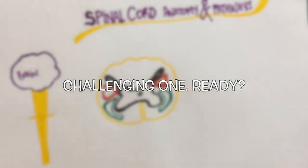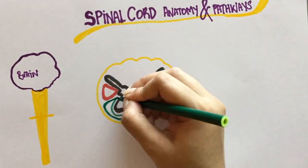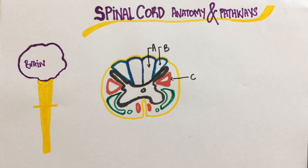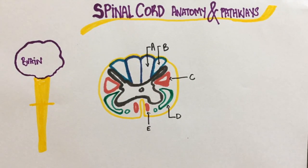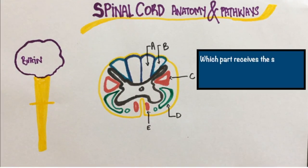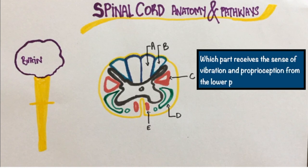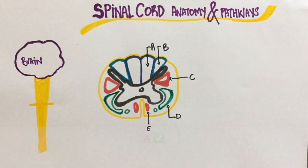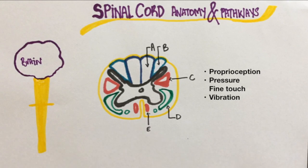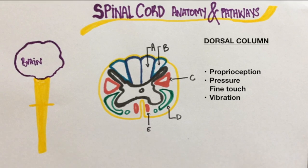Now, let's move to the more challenging part. This diagram is the reference for us and our questions are gonna be based on this. Question 1: Which part receives the sense of vibration and proprioception from the lower parts of the body? The correct answer is A. The part responsible for proprioception, pressure, fine touch and vibration is the dorsal column.